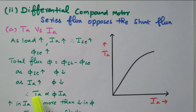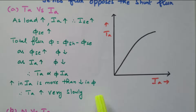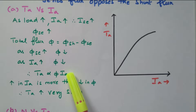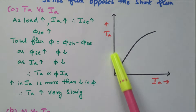In the cumulative case, both fluxes are added together; here they are subtracted. When the load increases, armature current increases but the flux decreases. Since T is directly proportional to φ × Ia, here Ia is increasing and φ is decreasing, but the increase in Ia is more than the decrease in φ, so it is compensated. The armature torque increases slowly — in the previous case it increases rapidly, but here it increases gradually.